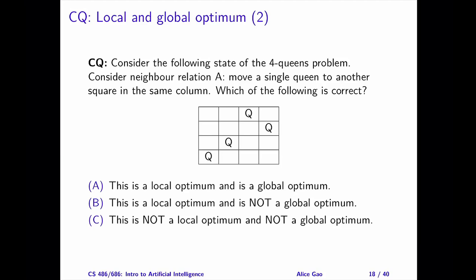Question 2: Consider the same state but a different neighbor relation. This neighbor relation says to choose one queen and move it to another row in the same column. Is this state the local optimum and/or a global optimum? Pause the video and choose an answer. The correct answer is B. This state is a local optimum but not a global optimum. Please watch a separate video for a detailed explanation.